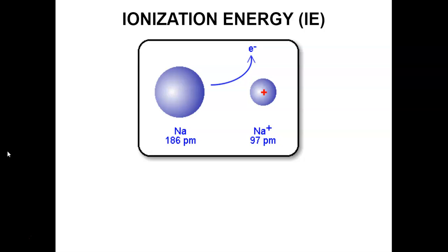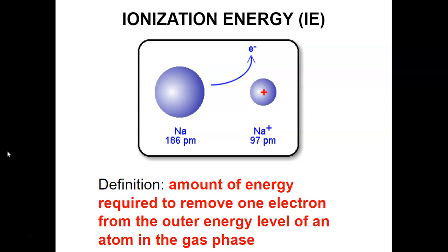Let's talk about ionization energy. Ionization energy is the amount of energy required to remove one electron from the outer energy level of an atom in the gas phase — basically, how hard is it to take an electron from an atom? The units are kilojoules per mole. Joules are a unit of energy, and mole is a way of counting a large number of atoms.